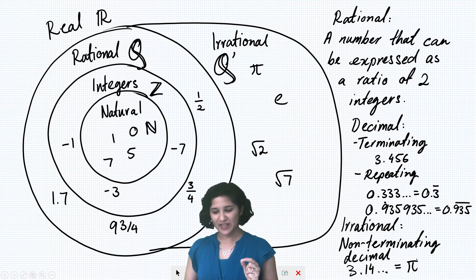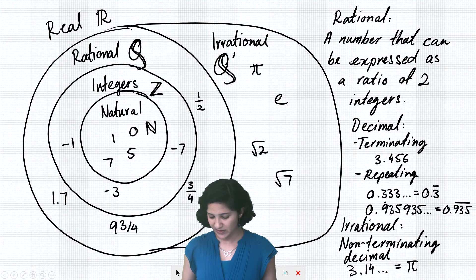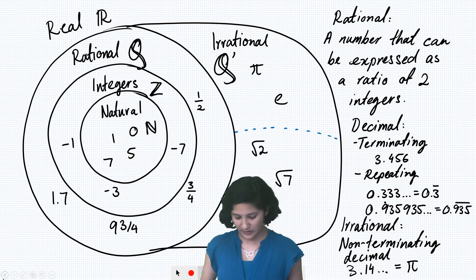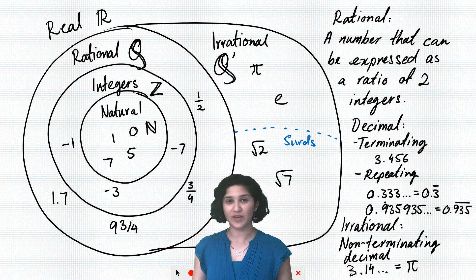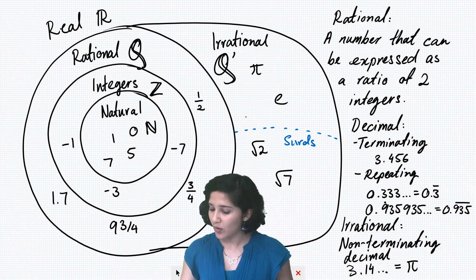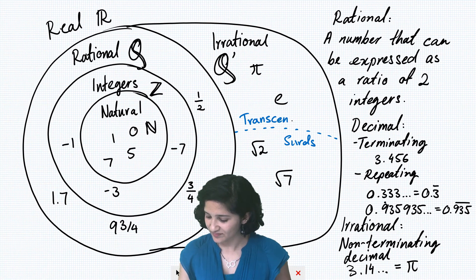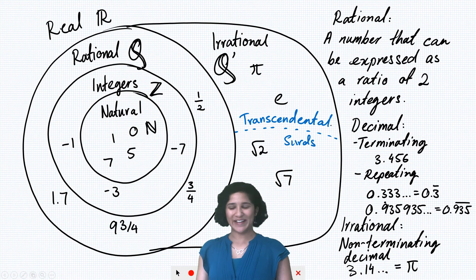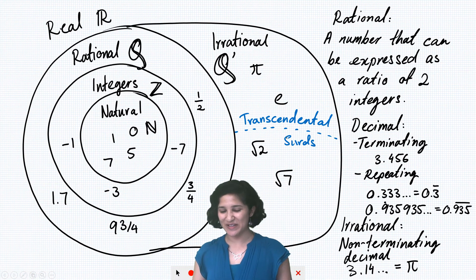One last little point. There are two types of irrational numbers. So we can actually split irrational numbers into these two types. They're called surds, which are these ones that we write with square root signs, or transcendental numbers. And you don't really have to know those two types, but I just like the name transcendental, so I wanted to show it to you.